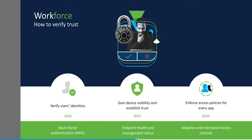Duo provides visibility into the devices you are leveraging and their posture, so you can ensure that these devices are running up-to-date software, perhaps encrypted or passcode protected. By understanding the posture of the device, you can decide if it's trusted. And finally, Duo quickly responds to potential breaches of trust because it enforces access policies for every application that limits access to trusted users and devices. With that, Duo can block any access attempt that doesn't meet your security standards.